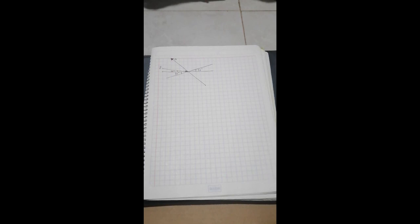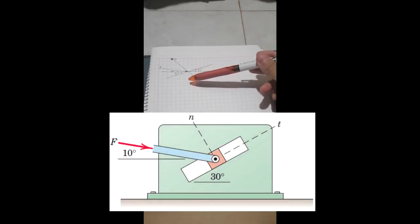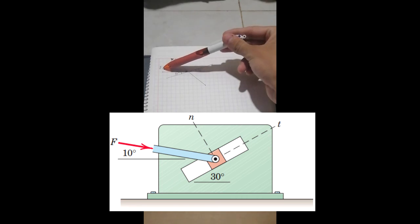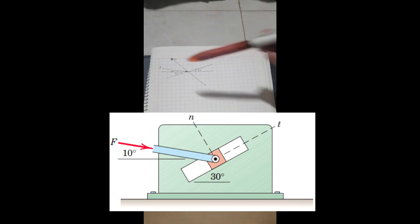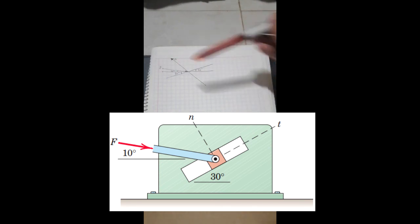As a first step, we can draw the free body diagram. We have the original figure and the free body diagram. You can see that the force is here, so we can find the N component of this force, and we will continue with the problem.